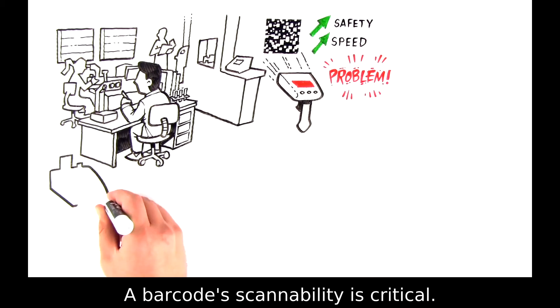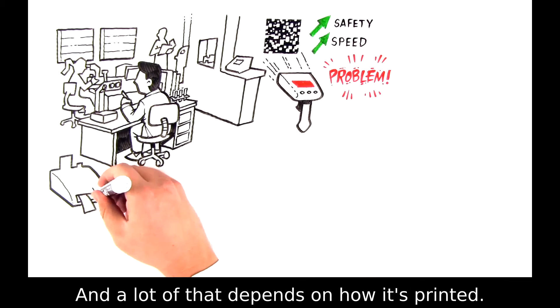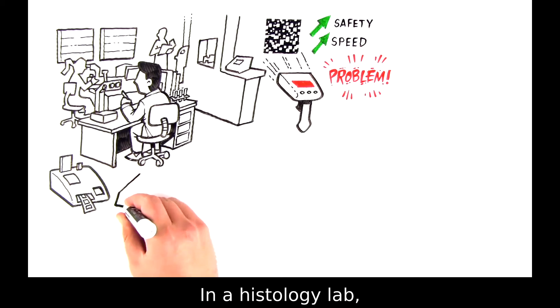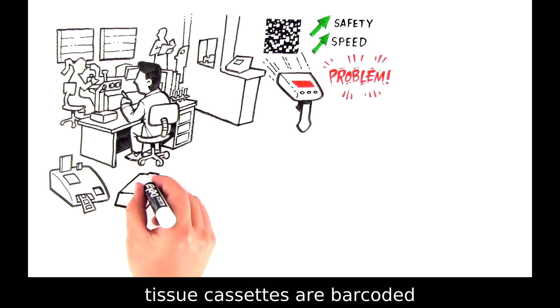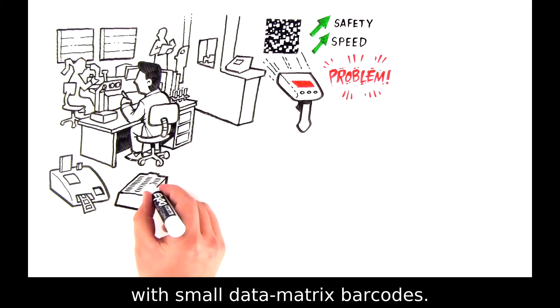Barcode scannability is critical, and a lot of that depends on how it's printed. In a histology lab, tissue cassettes are barcoded with small data matrix barcodes.